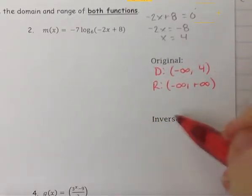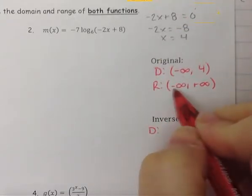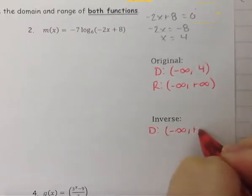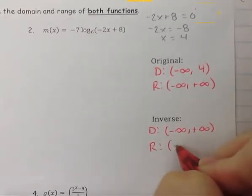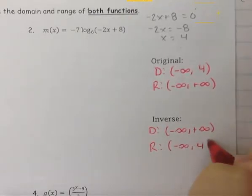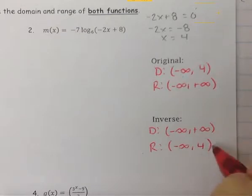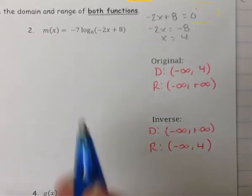That means our inverse domain and range: the inverse domain would be negative infinity to positive infinity, and our inverse range will be negative infinity to positive 4 but never touch it — so we have an asymptote at the y value of 4. We can find the actual inverse equation and then check our domain and range on the inverse as well.